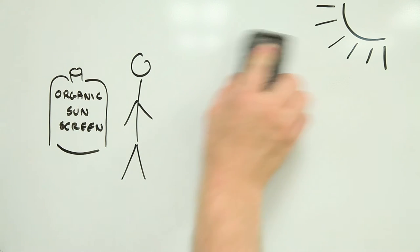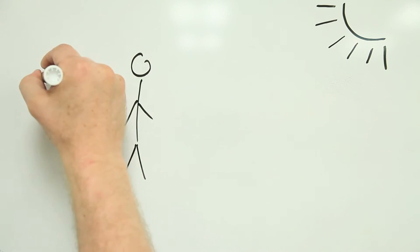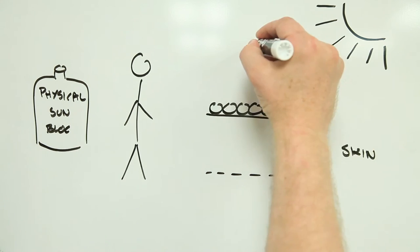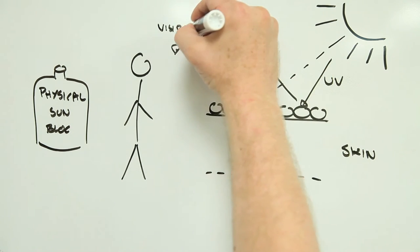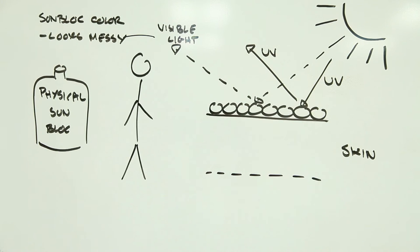Inorganic sunscreens, on the other hand, work differently. Particles of an insoluble substance like titanium dioxide are applied to the surface of the skin where they reflect the UV light. But they can also reflect visible light and look kind of messy.